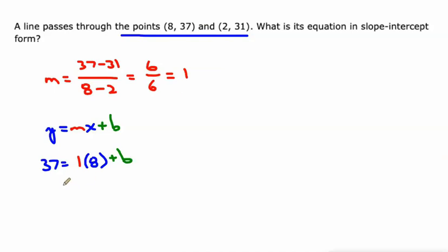We can multiply 1 times 8 is 8. And then subtract 8 from both sides, and we get 29. So our y-intercept is 29.